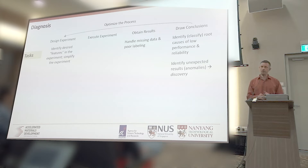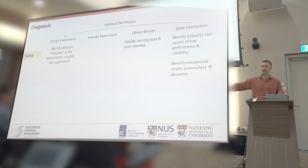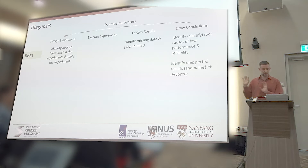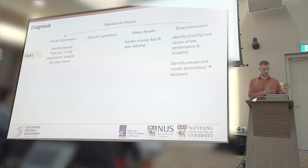When drawing conclusions, they generally fall into two categories: we want to classify results and identify root causes of low performance and reliability in our prototypes, and we want to identify unexpected results or anomalies — differentiating them from artifacts to discover something new. In many cases we have to loop back several times as we refine our process, which is called process optimization. I'm going to take these terms and translate them across the silo from material science into machine learning.